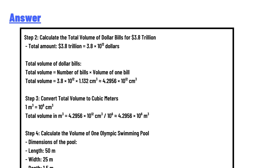Step 3: Convert total volume to cubic meters. One cubic meter equals 10 to the 6th cubic centimeters. Total volume in cubic meters equals 4.2956 times 10 to the 12th cubic centimeters converted to cubic meters.